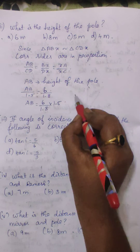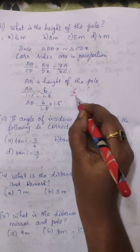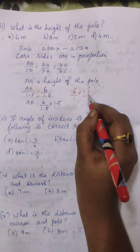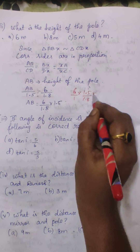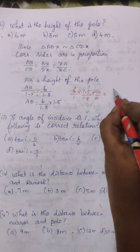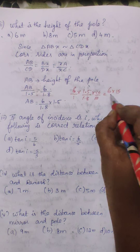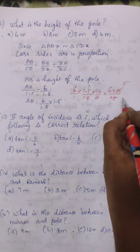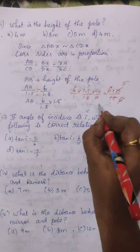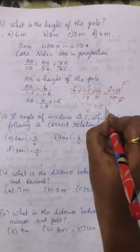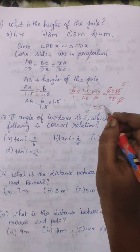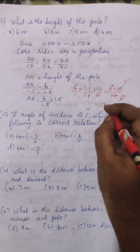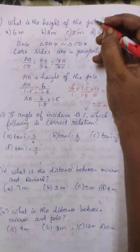We calculate 1.5 times 1.8. Multiplying and dividing by 10, we get 6 times 15 divided by 18. Since 6 cancels, we are left with 5. So the height of the traffic pole is 5 meters. Option C is the correct answer.